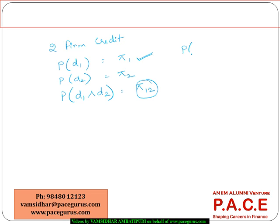If I want to know the probability of D1 alone, the firm D1 alone defaulting, I can write it as pi 1 minus pi 1, 2. Similarly, the probability of D2 alone defaulting, second firm alone defaulting, it is pi 2 minus pi 1, 2.